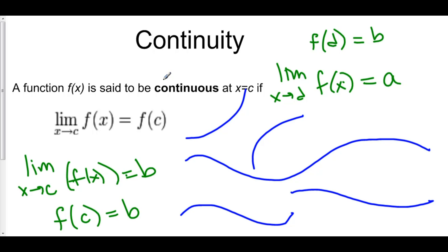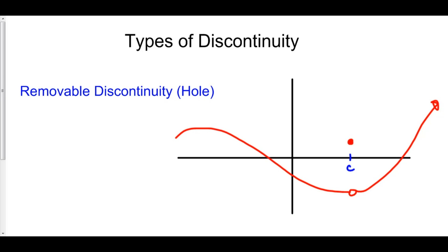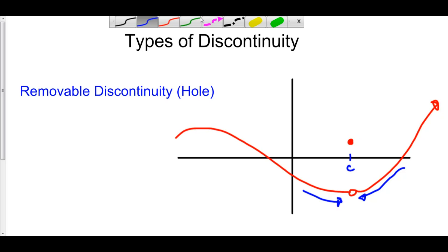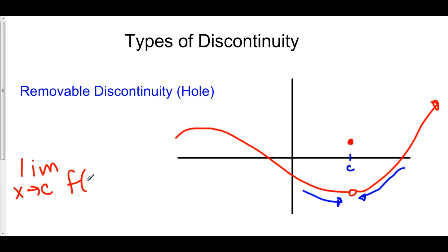There are four different types of discontinuity. The first type is called a removable discontinuity — you've seen this before as a hole. The limit as x approaches c is at the hole, because as we approach c from either side we're approaching the value where the hole would be. However, the function value at c is somewhere else, which is why there is a discontinuity: the limit as x approaches c of f of x is not equal to the function value at c.